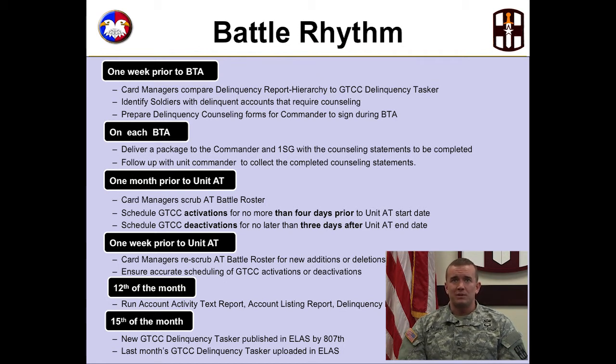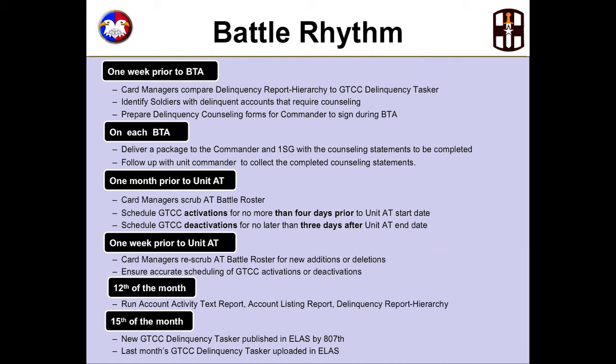One month prior to unit AT, card managers scrub the AT battle roster. Schedule GTCC activations for no more than four days prior to the unit AT start date, and schedule GTCC deactivations for no later than three days after the AT end date. One week prior to unit AT, card managers re-scrub the AT battle roster for new additions or deletions and ensure accurate scheduling of GTCC activations or deactivations. On the 12th of every month, run the account activity text report, account listing report, and the delinquency report hierarchy. On the 15th of the month, new GTCC Delinquency Taskers are published in ELAS by the 807th, and the previous month's GTCC Delinquency Tasker is uploaded into ELAS.